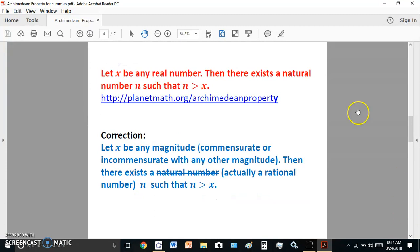The next one says, incorrectly, let X be a real number. There aren't any real numbers. This is from planet math. Then there exists a natural number N such that N is greater than X. And the correct statement, as you see down here, is again, let X be any magnitude. Then there exists not a natural number because natural numbers, by the way, are rational numbers. The only numbers are rational numbers. There are no other numbers. Natural numbers are ratios, by the way. They definitely are not any different from the rational numbers. And if the morons who came before me understood the elements of Euclid, they would never have called them natural numbers. They would have simply said, those are rational numbers. So there exists an N such that N is greater than X.